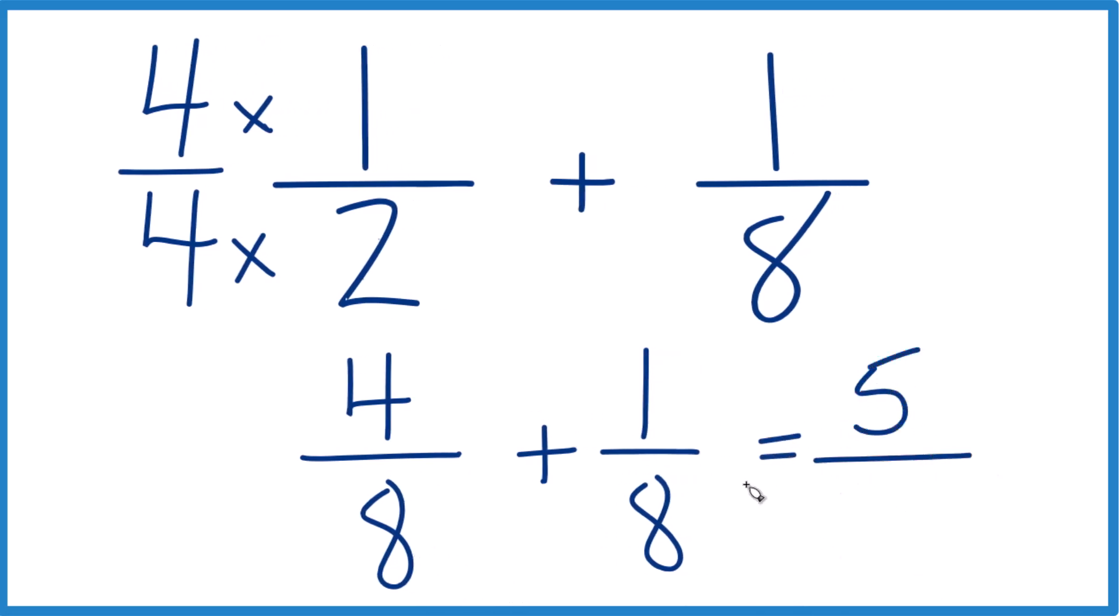And then eight, we just bring it straight across. And in answer to our question, one half plus one eighth, that equals five eighths. And that's how you do it. This is Dr. B, and thanks for watching.